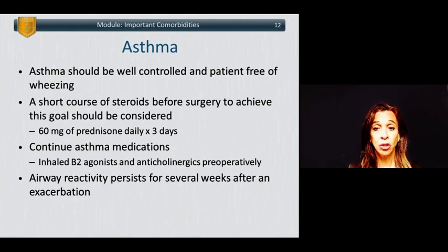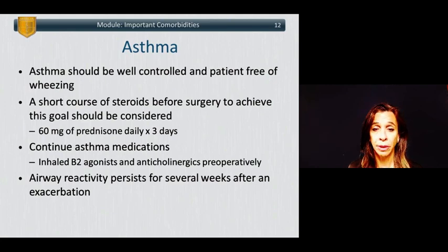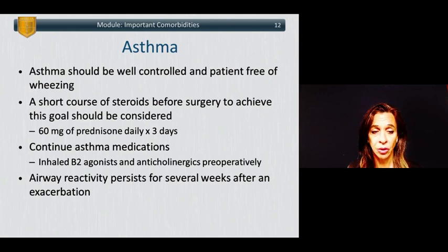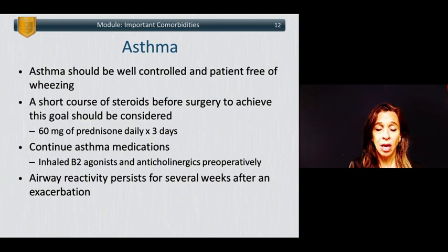Asthma should be well controlled and patients should be free of wheezing. A short course of steroids before surgery, typically 60 milligrams of prednisone daily for approximately three days, should be considered in patients who are not optimally controlled. One should continue asthma medications; inhaled beta-2 agonists and anticholinergics should definitely be taken on schedule up until the time of surgery. Remember, airway reactivity persists for several weeks after an exacerbation of asthma.